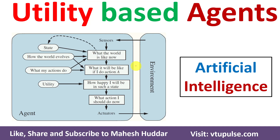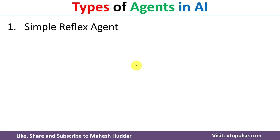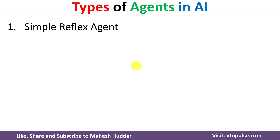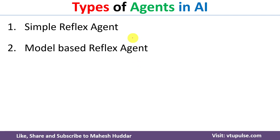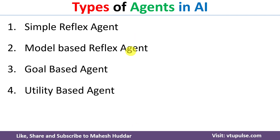Welcome back. In this video I will discuss Utility Based Agents in Artificial Intelligence. As discussed earlier, there are mainly 4 types of agents in artificial intelligence: Simple Reflex Agents, Model Based Reflex Agents, Goal Based and Utility Based Agents.